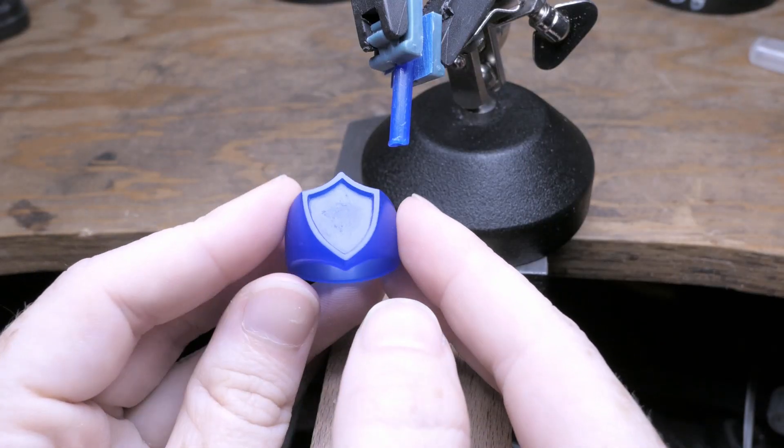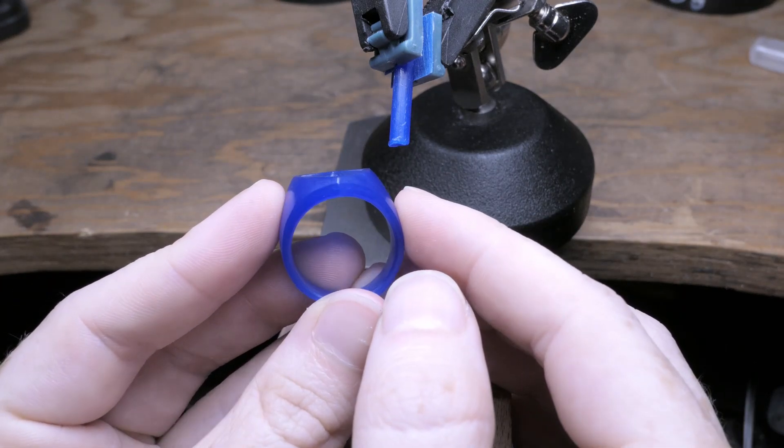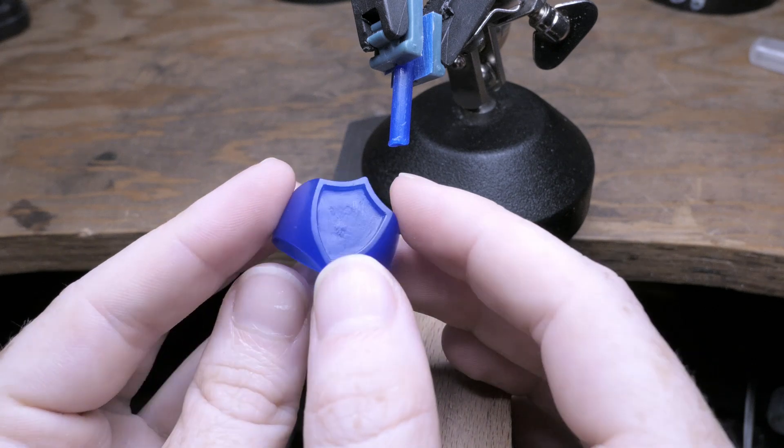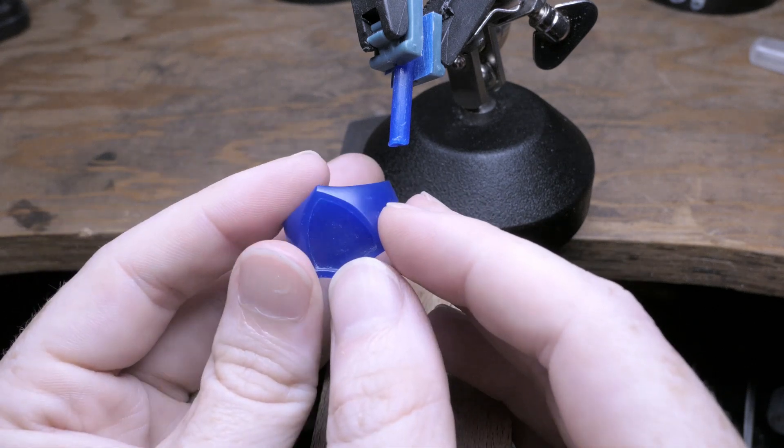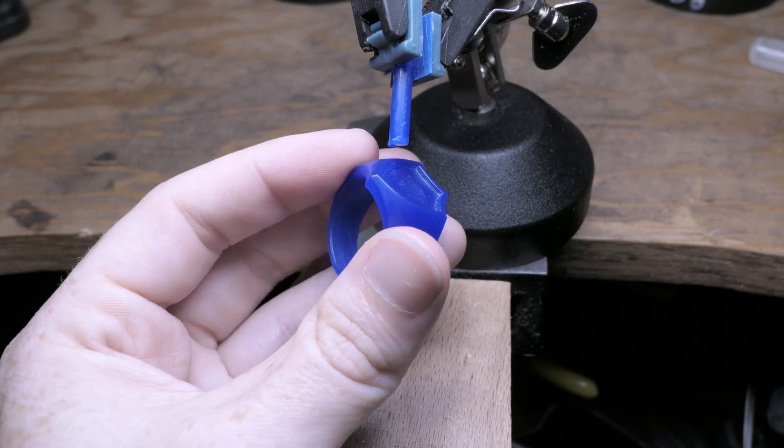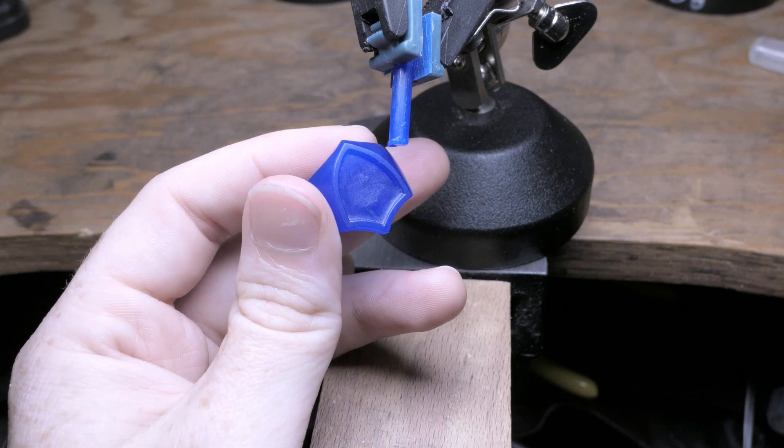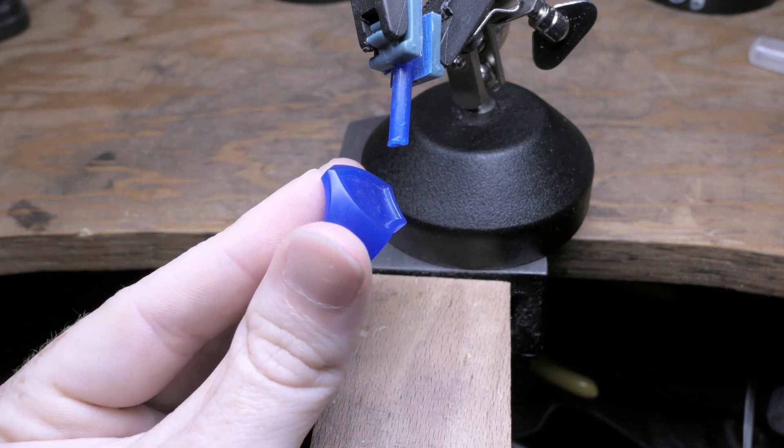And for the wax ring, I'm going to attach a sprue right over here on the curved side instead of the head of the ring, just because I think it's going to be easier to remove and clean up. And it's also just a little bit thicker in this section too, which is normally a good rule of thumb for where to attach your sprue.